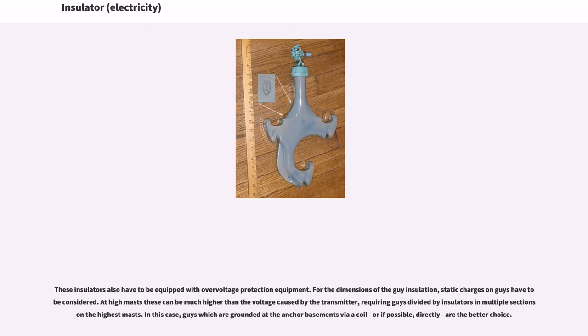For the dimensions of the guy insulation, static charges on guys have to be considered. At high masts these can be much higher than the voltage caused by the transmitter, requiring guys divided by insulators in multiple sections in the highest masts. In this case, guys which are grounded at the anchor basements via a coil, or if possible directly, are the better choice.